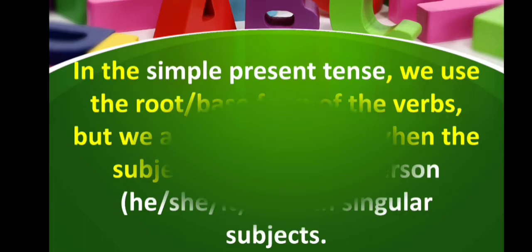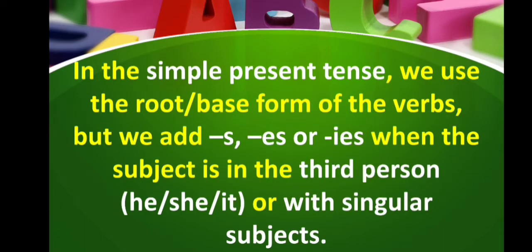In the simple present tense, we use the root or base form of the verbs. But we add S, ES, or IES when the subject is in the third person — he, she, it — or with singular subjects.